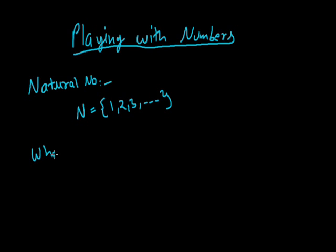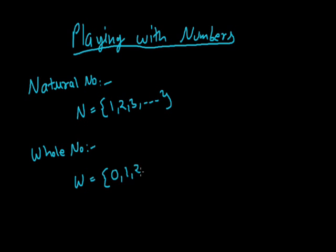After natural numbers we have whole numbers. If we include 0 in the set of natural numbers then it becomes a whole number, and the set of whole numbers is represented by capital letter W. So natural numbers that is 1, 2, 3 along with 0 — so 0, 1, 2, 3 — will form a set of whole numbers.